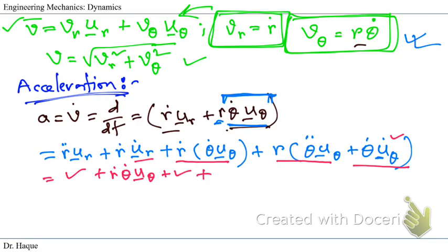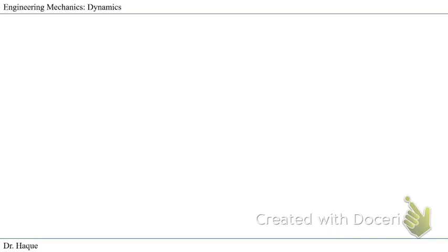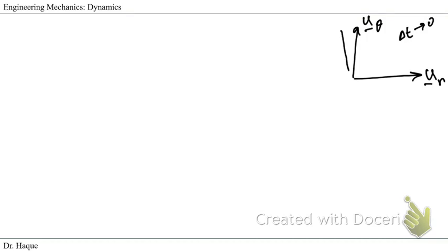Let's solve the same type of problem we used to find u_r-dot — now applied to find u_θ-dot. Moving to a new page: u_r is in the radial direction, so the perpendicular direction would be u_θ. Taking a time limit as delta-t tends to zero, we assume that in that small time the new position would be u_θ-prime and the change would be delta u_θ, with the angle covered being delta-θ.